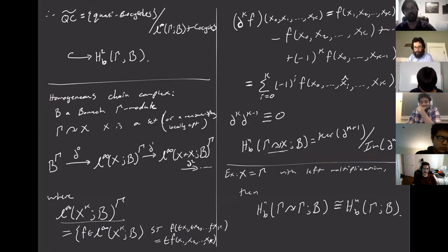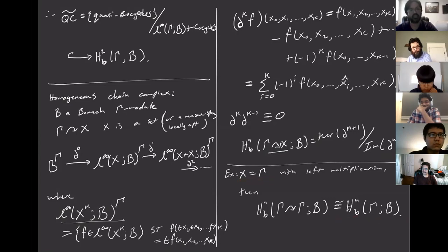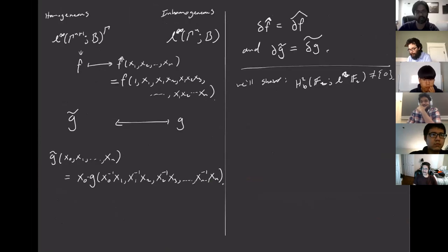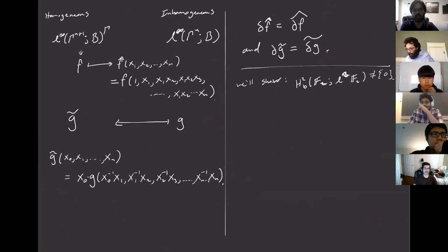We're mostly going to be interested in whether it's the zero space or the non-zero space, so just as a vector space is how you usually care about this. This is the homogeneous chain complex, and I remarked that this is for the left action of the group on itself. It's naturally isomorphic to the usual chain complex defined last lecture, and here are the explicit formulas to map back and forth. You can check that they're compatible and give the same cohomology.